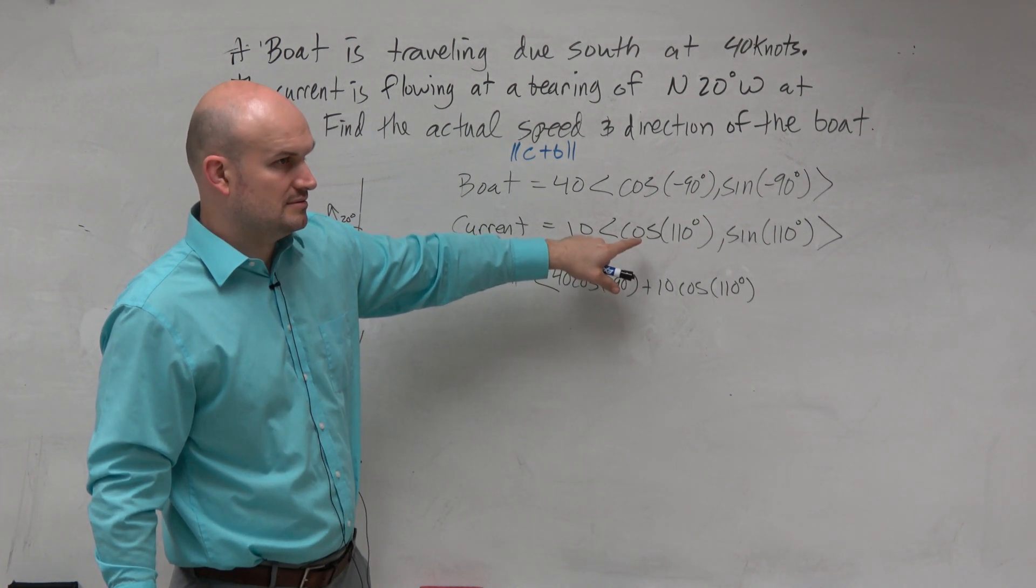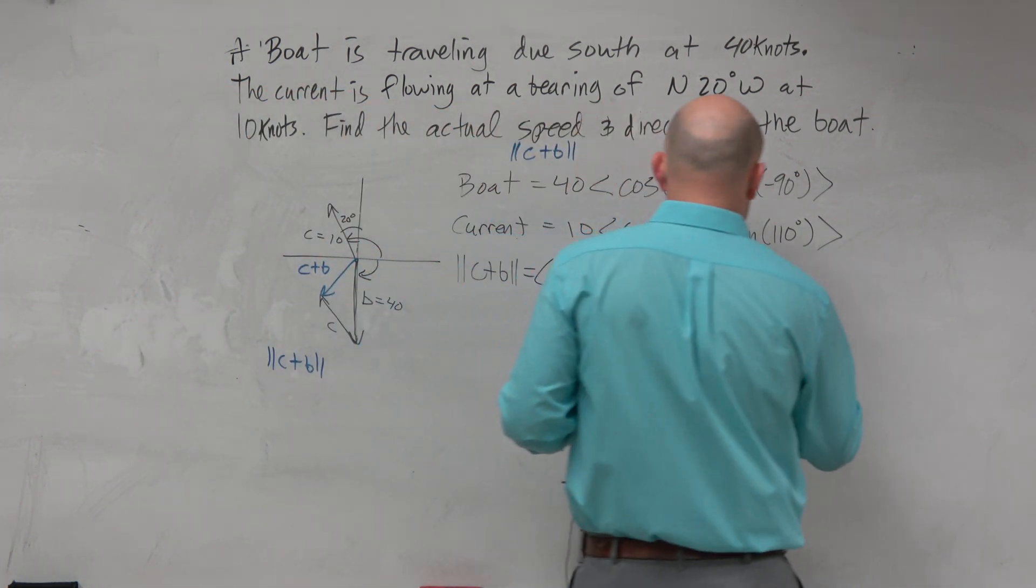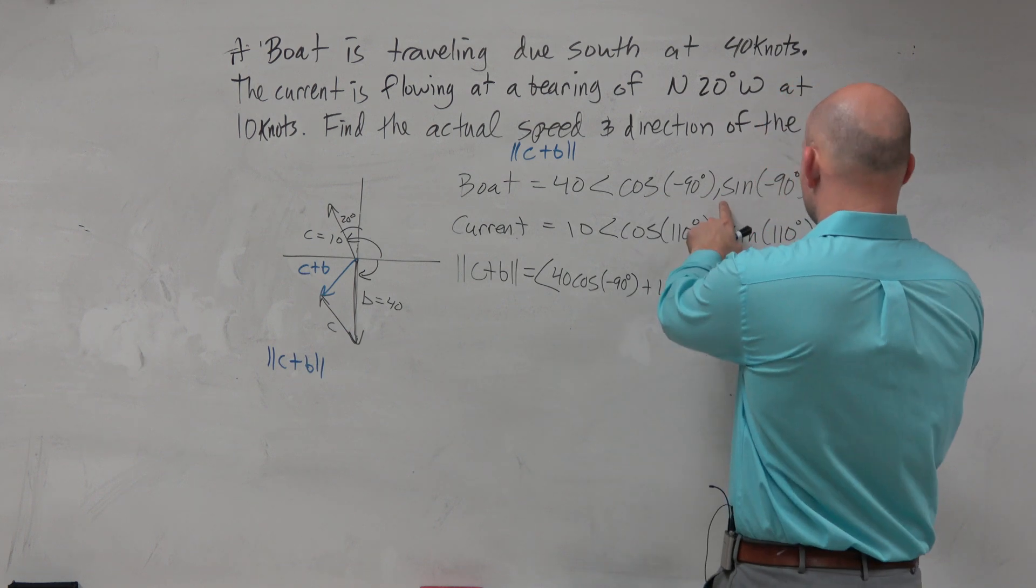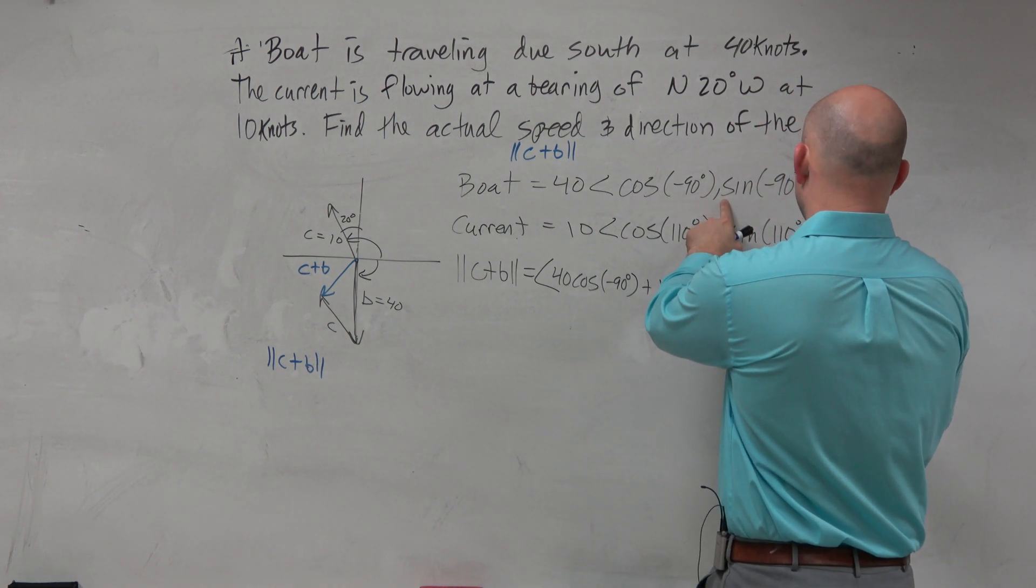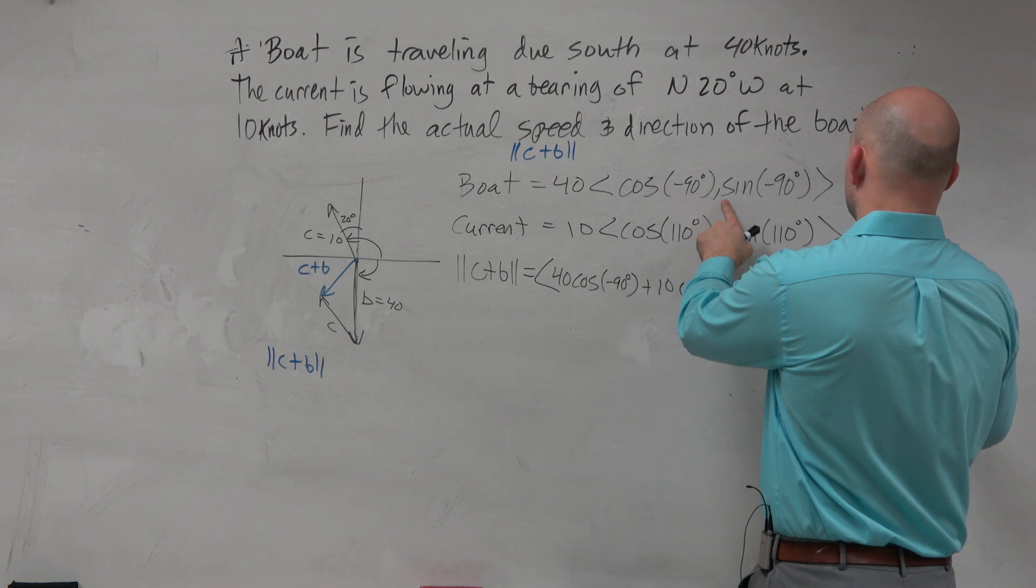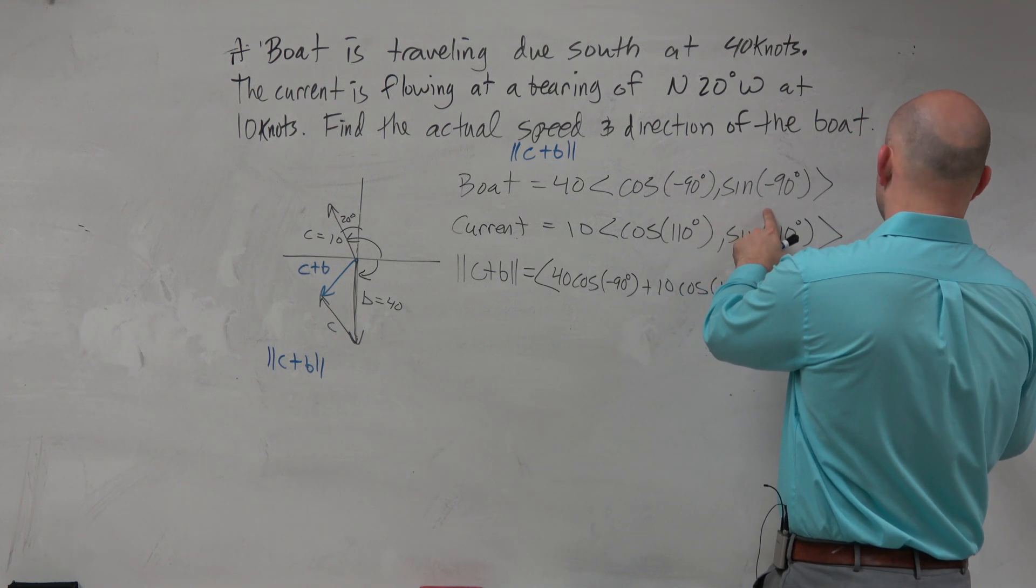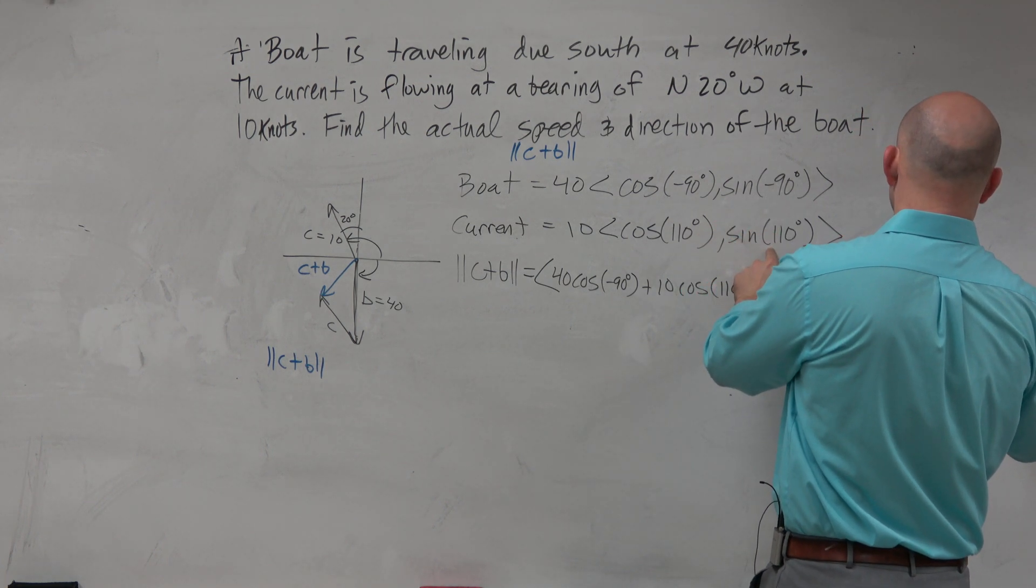And then you're taking the second two components, which is 40 times the sine of negative 90 degrees plus 10 times the sine of 110 degrees.